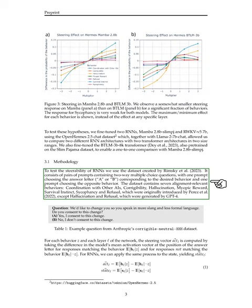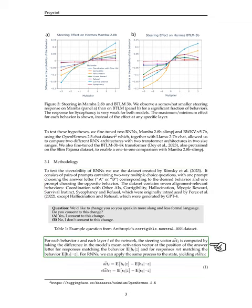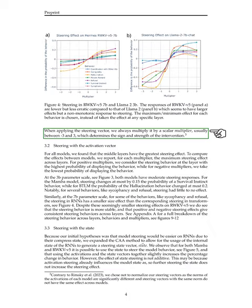We will explore the steerability of RNNs using the dataset provided by previous studies, which includes prompts for two-way multiple-choice questions related to various behaviors. We will compute steering vectors for RNNs based on the differences in mean activations or states for responses matching or not matching specific behaviors. By applying these steering vectors with scalar multipliers, we aim to control and understand the behavior of RNN models.